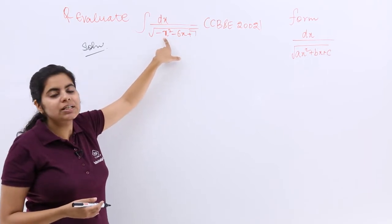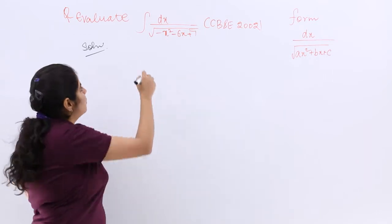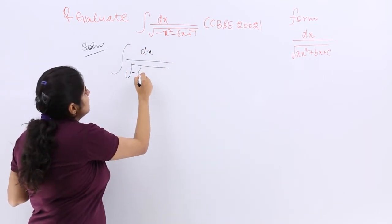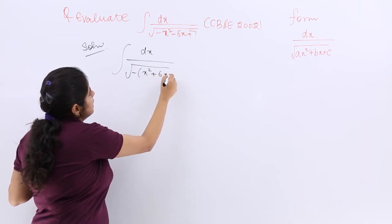See, the x square coefficient is not only 1 but minus 1, so I have to take minus common. So I write dx, then I have under root minus sign is common, so it is x square plus 6x minus 7.